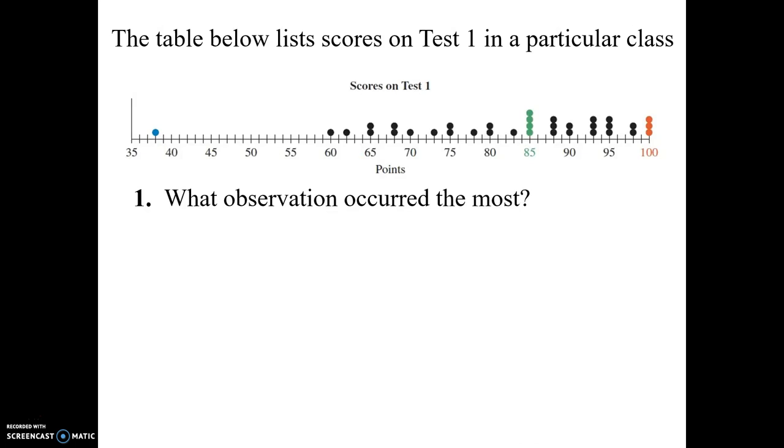Now here's a dot plot. A dot plot, basically what it does is it has a range of values, and it places a dot every time a particular value is selected. For example, the table below lists scores on test 1 in a particular class.